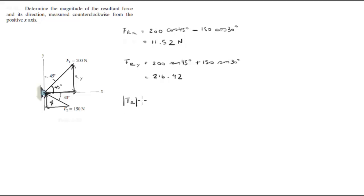To calculate the magnitude of the resultant force, you're going to square them, square and square root the result, and this is going to give you 216.73 Newtons.